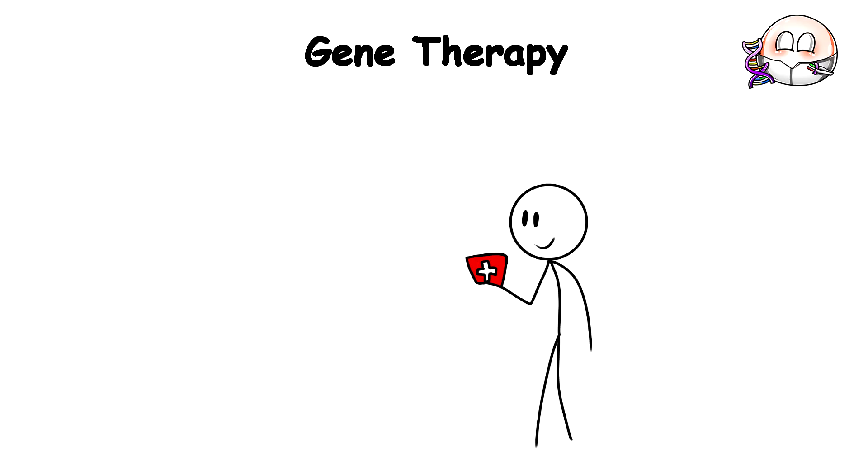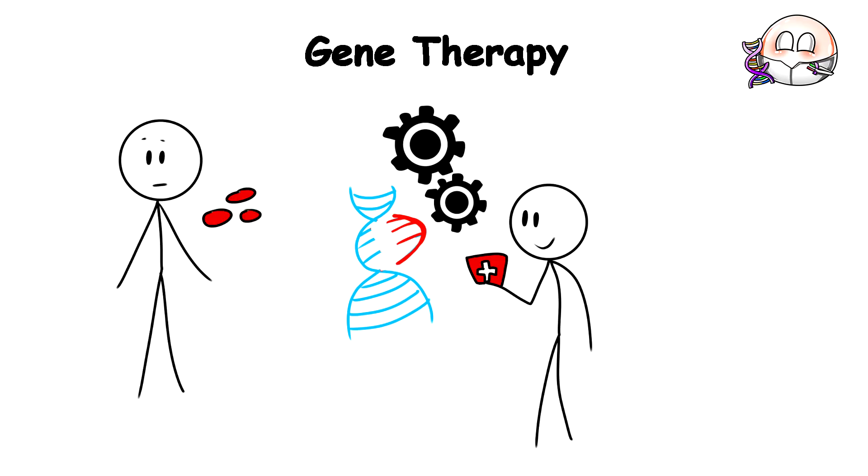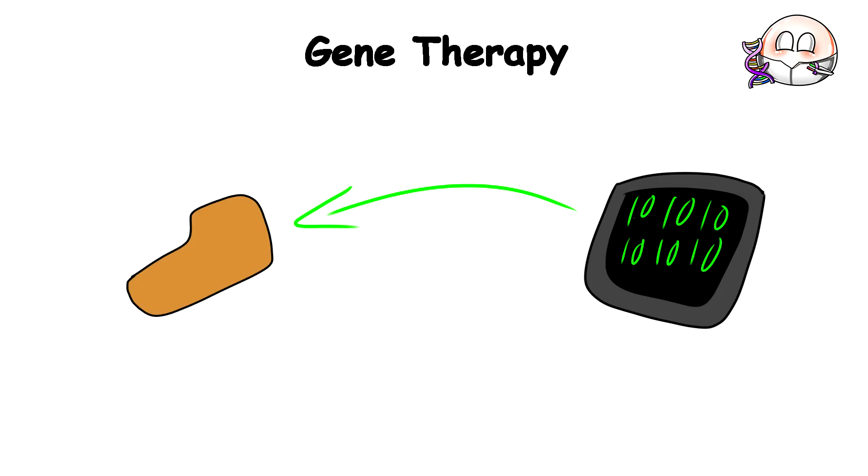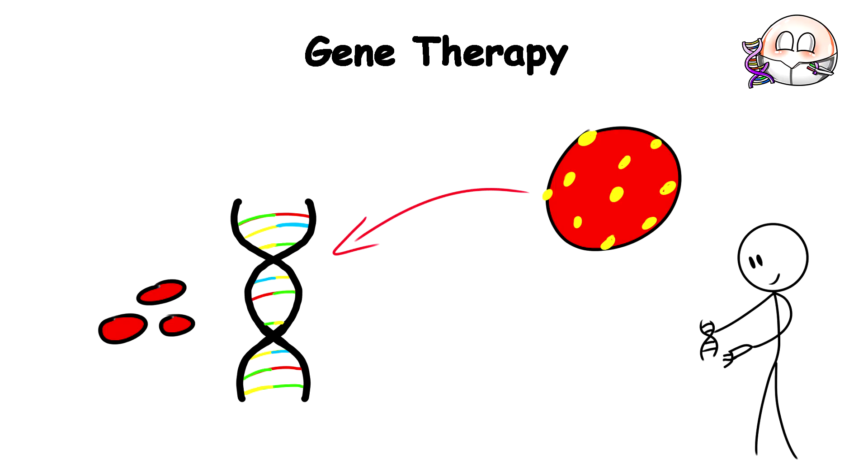Rather than providing treatments that help manage a genetic condition, Gene Therapy introduces functional genes into a patient's cells to compensate for the flawed, disease-causing versions. It's like uploading a master correction file to override the existing code. Some gene therapies employ harmless viruses as biological delivery vehicles to smuggle the therapeutic genes into the targeted cells.